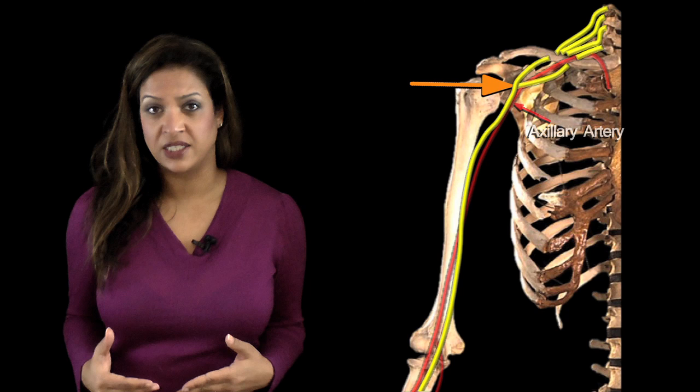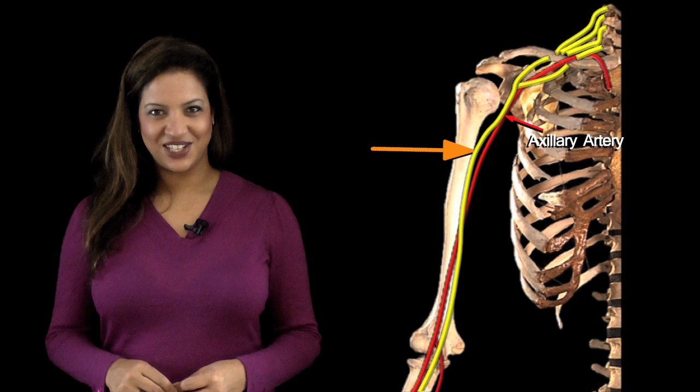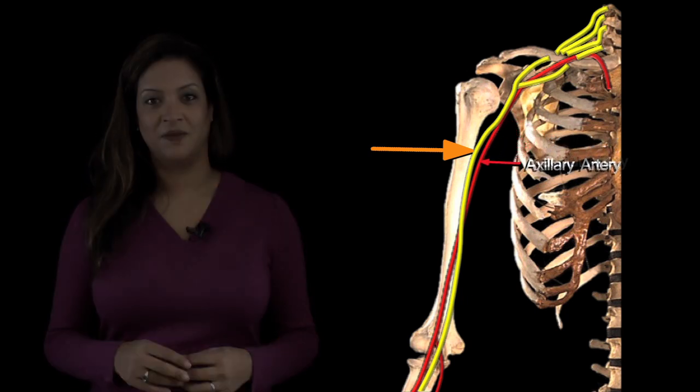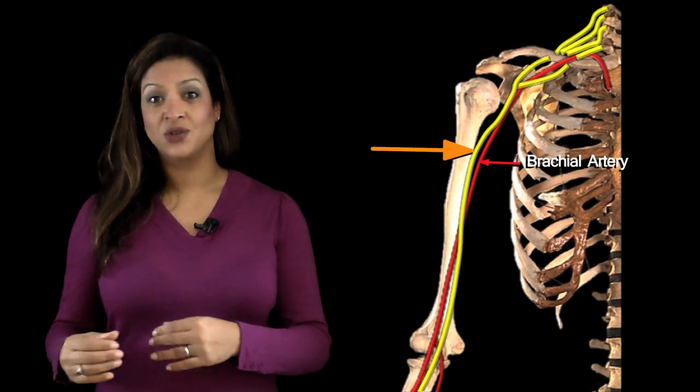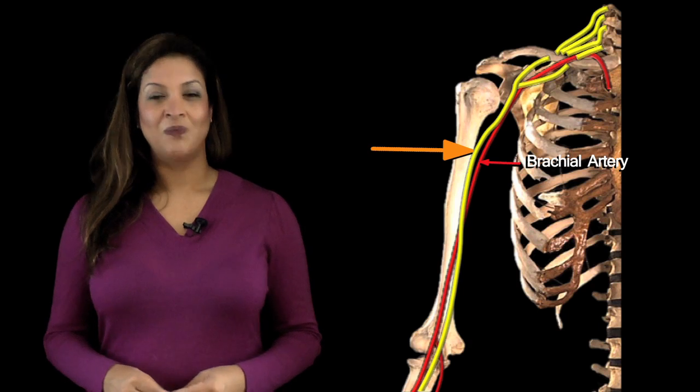Once it's formed, the median nerve lies immediately anterior to the axillary artery but very quickly moves lateral to it. As it continues down the arm, the axillary artery turns into the brachial artery, so the median nerve lies lateral to the brachial artery. About halfway down the arm, the median nerve crosses over so it now lies medial to the brachial artery. The median nerve has absolutely no branches whatsoever in the arm.